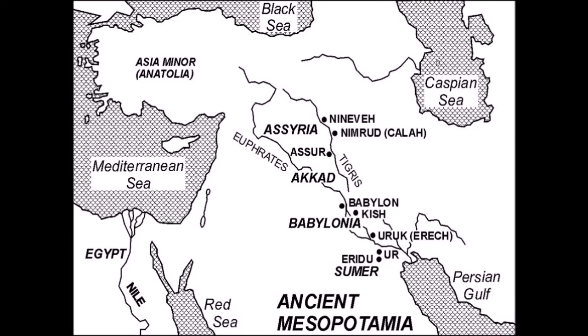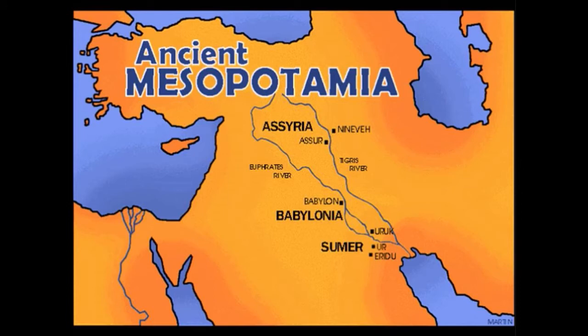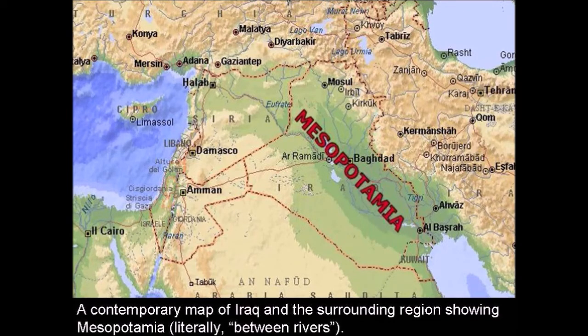Mesopotamian Civilizations. Mesopotamia refers to the region of Iraq and Kuwait in West Asia. Several kingdoms flourished in Mesopotamia: Sumerian, Akkadian, Babylonian, and Assyrian. In Greek, 'Meso' means 'in between' and 'potamus' means river – the Euphrates and Tigris flow here and drain into the Persian Gulf. The northern part is called Assyria and the southern part is called Babylonia.